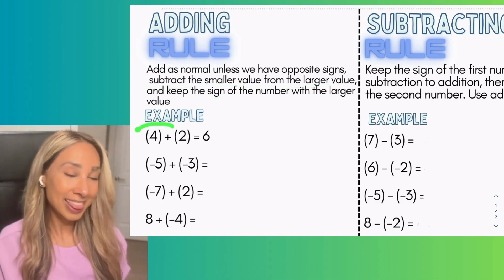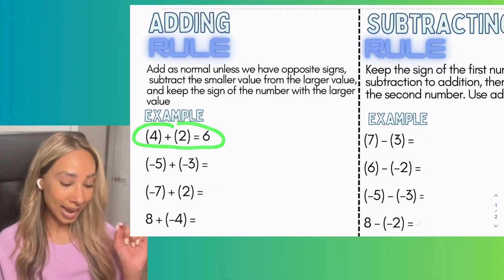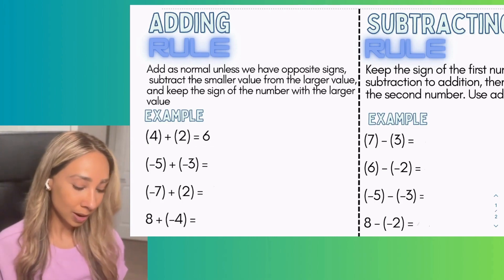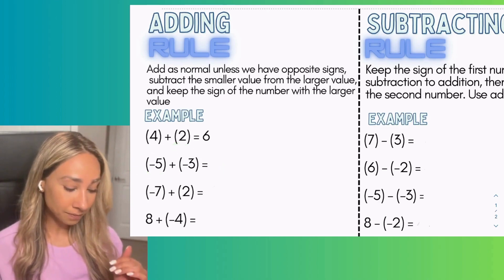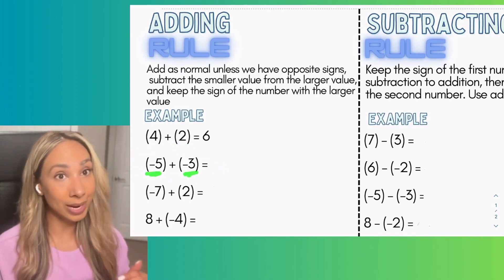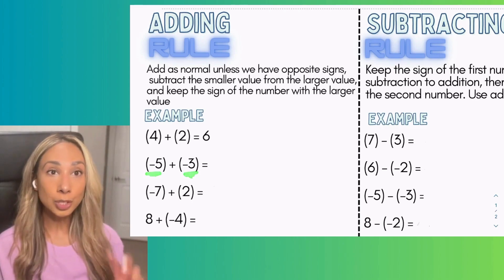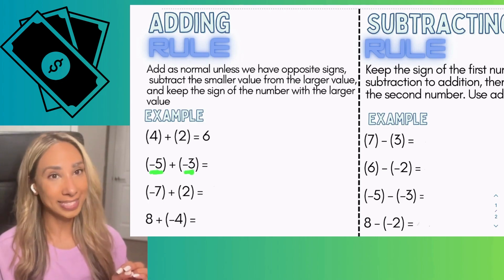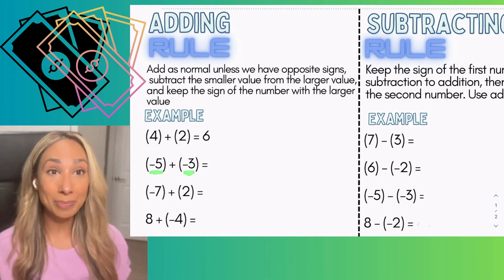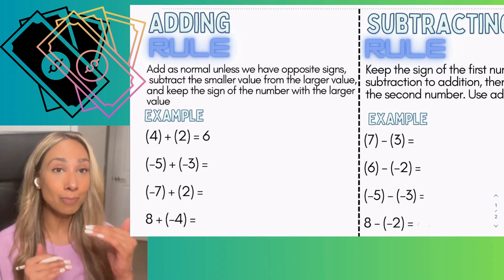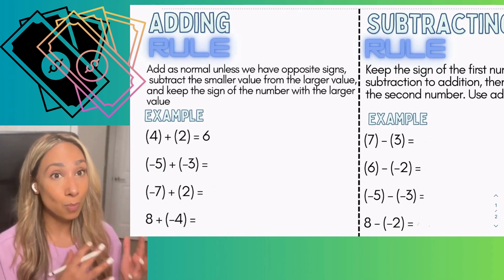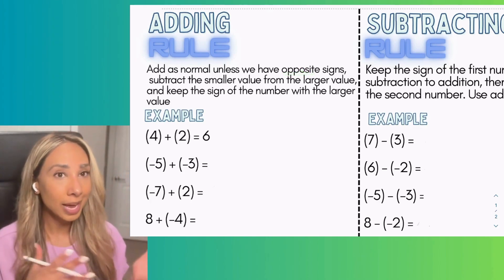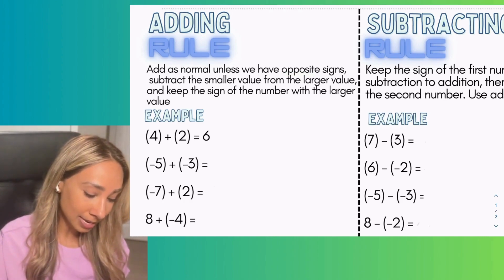The first example is already done for us — that's the addition we've been doing since we were little. We're adding positive four plus positive two, which gives us positive six. The second example: we're taking five negative things and adding three negative things. Think of it as owing someone five bucks and then owing them three more — the value goes up but stays negative. We add as normal and keep the sign, giving us negative eight.